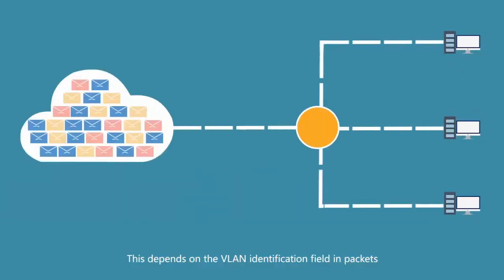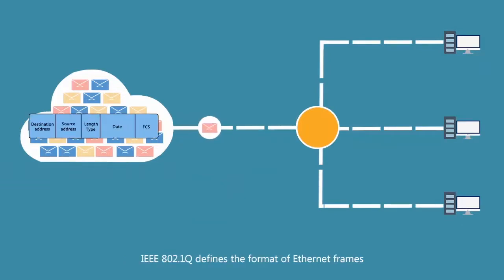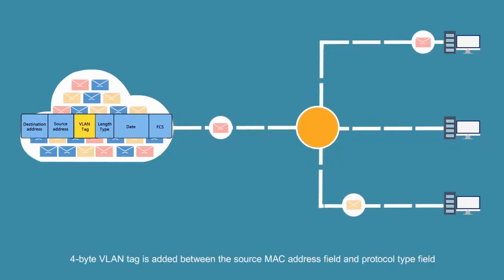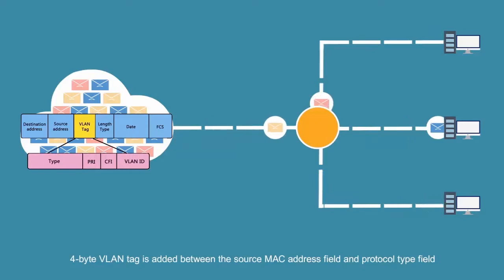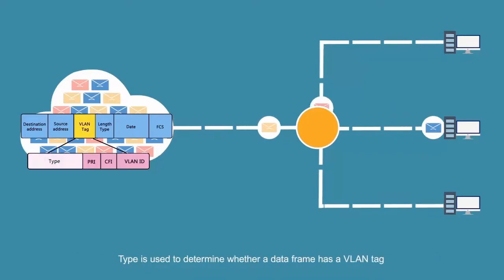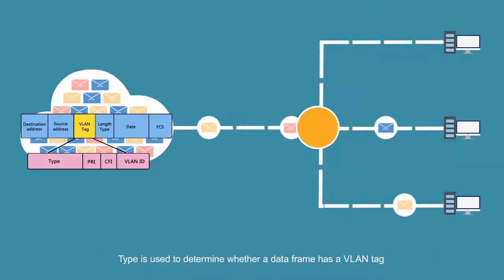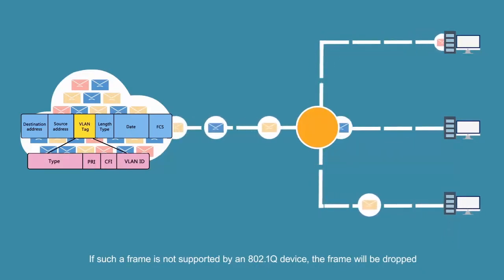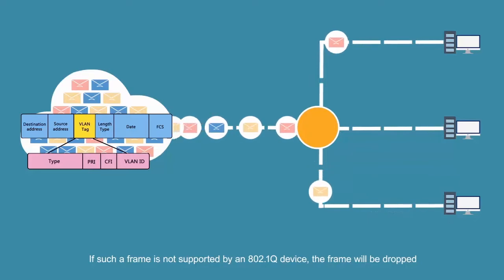This depends on the VLAN identification field in packets. IEEE 802.1Q defines the format of Ethernet frames. A VLAN tag is added between the source MAC address field and the protocol type field. The Type field is used to determine whether a data frame has a VLAN tag. If such a frame is not supported by an 802.1Q device, the frame will be dropped.